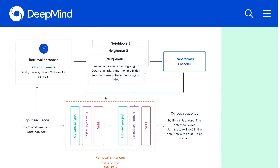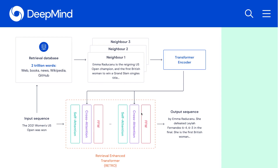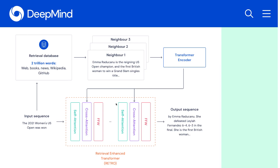So how does this model work? Given an input sequence such as 'The 2021 Women's US Open was won,' the goal is to generate an output such as 'By Emma Raducanu, She Defeated,' and so on. The RETRO model contains two components.